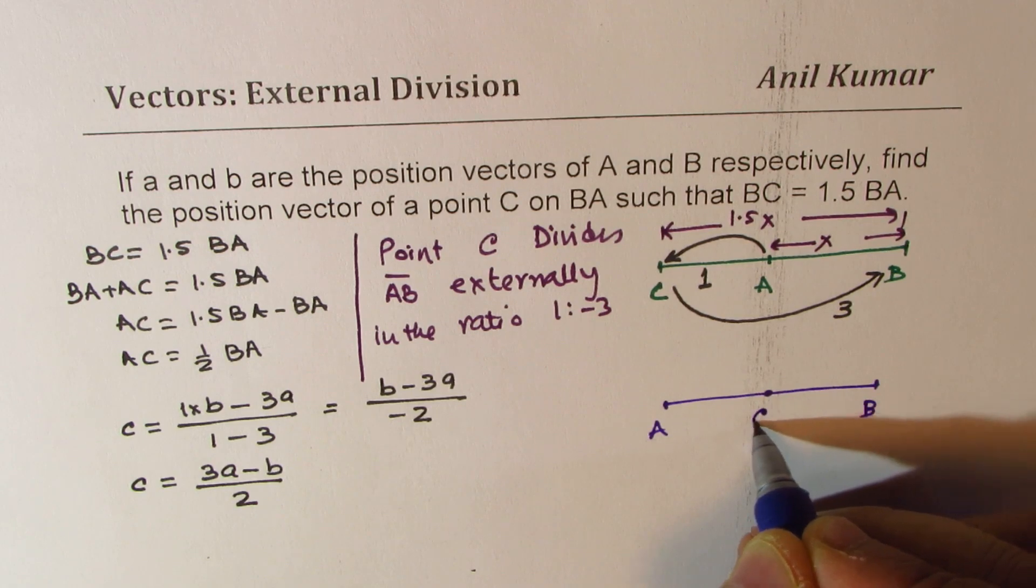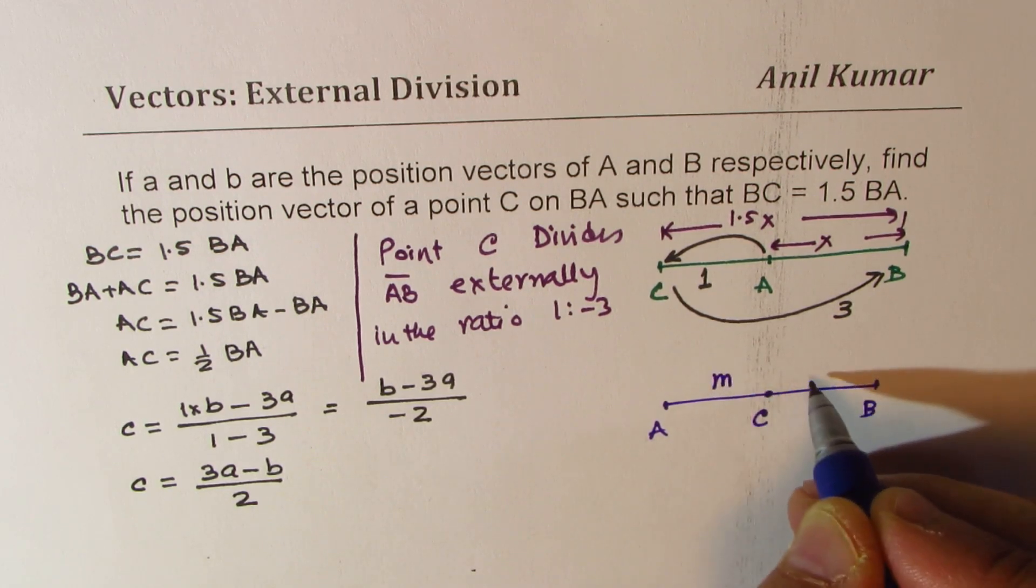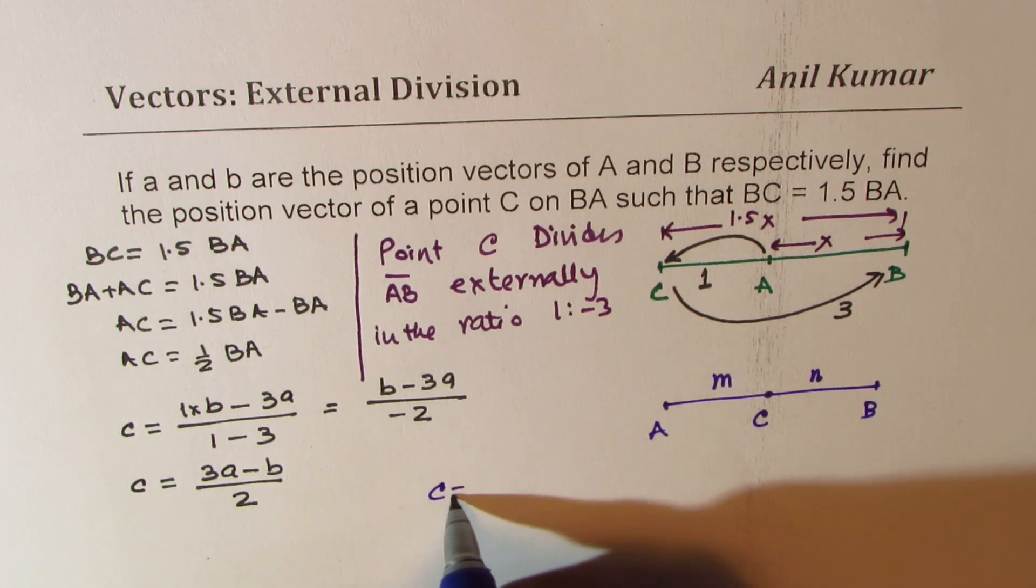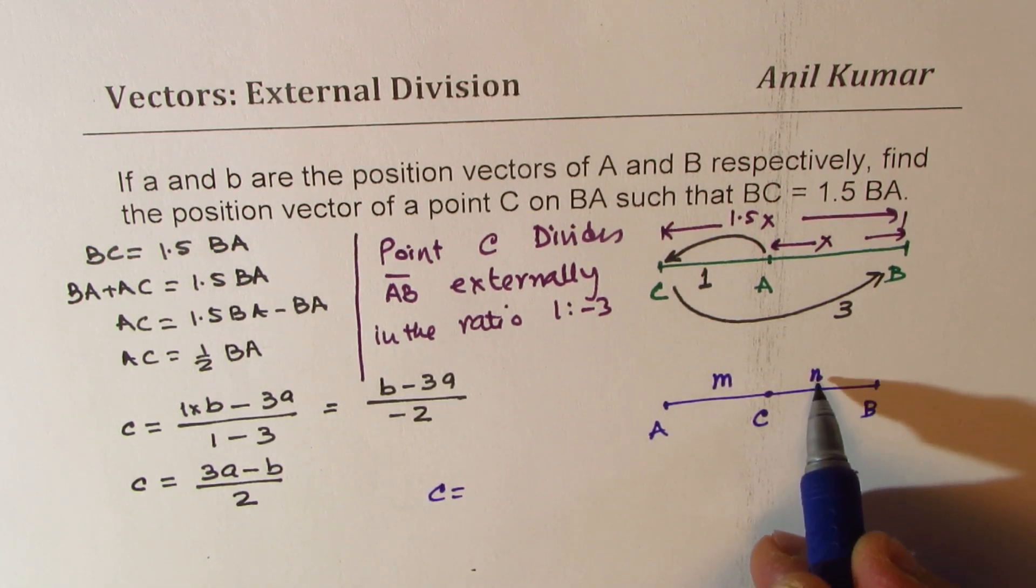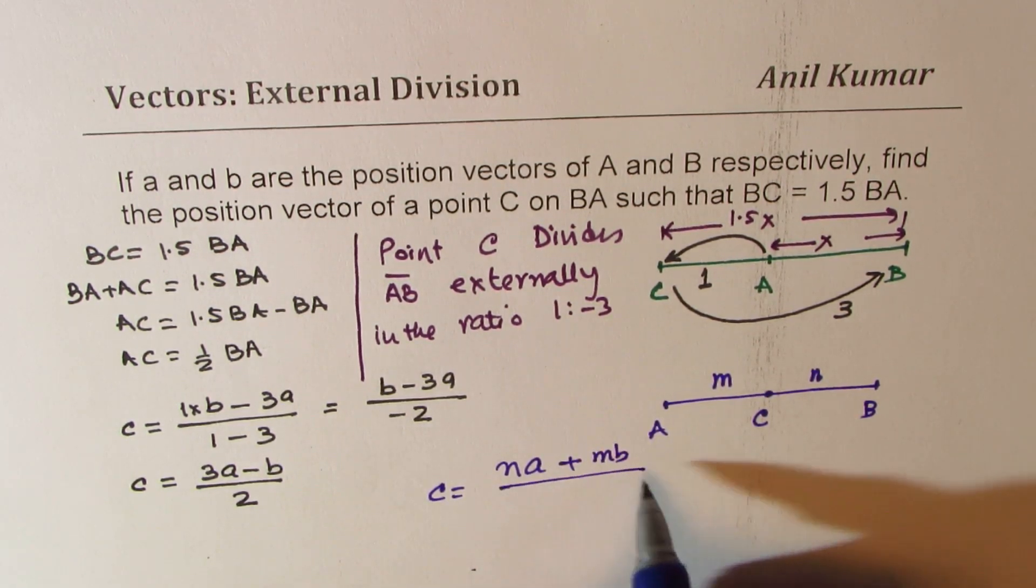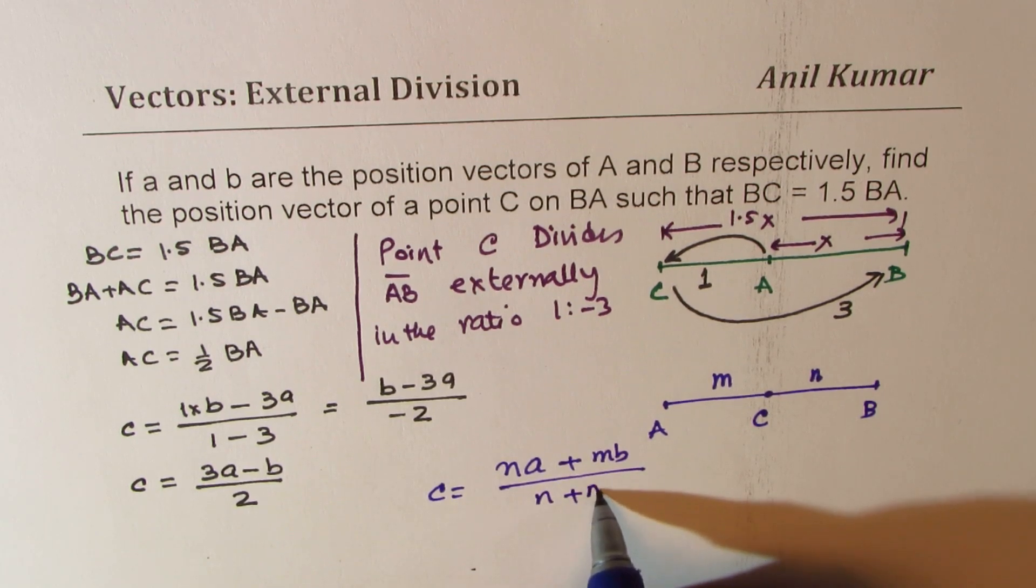if it is internal division, let's say these points are A and B, and C is somewhere in between, and the ratios are M and N, in that case, value of C will be equals to N times A plus M times B over N plus M.